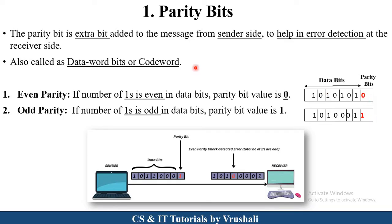This bit is also called the data word bit or code word. In even parity, we count how many ones are in the message. If there are an even number of ones — for example 1, 2, 3, 4 — the parity bit is 0. If the message has an odd number of ones — for example 1, 2, 3 — then the parity bit is 1.